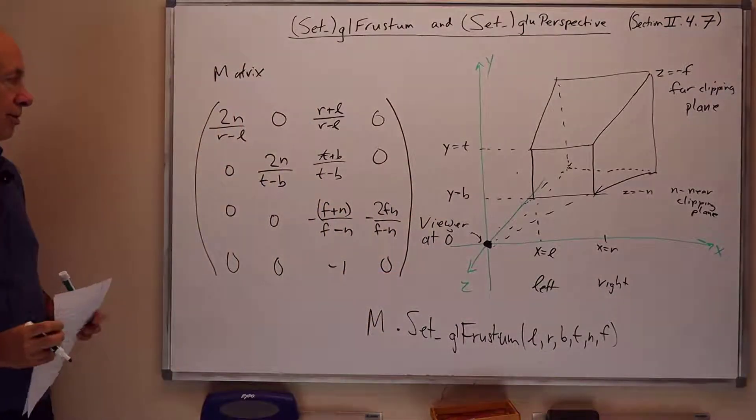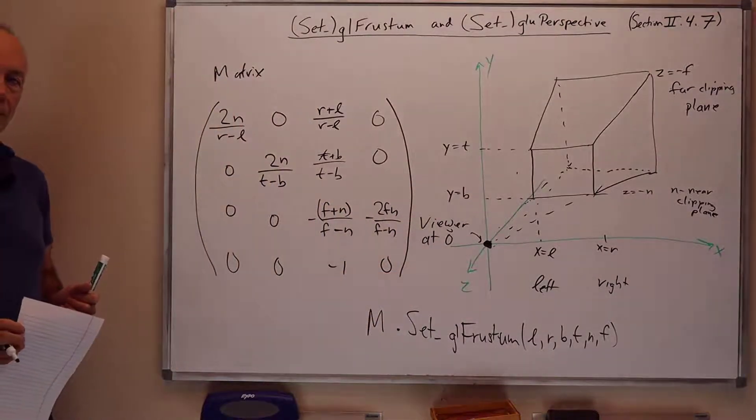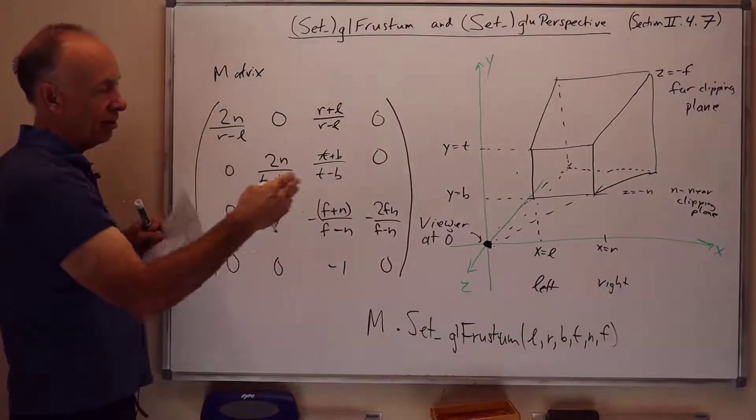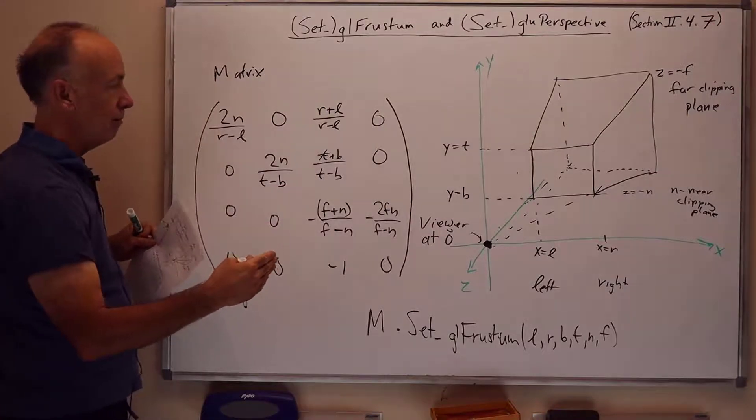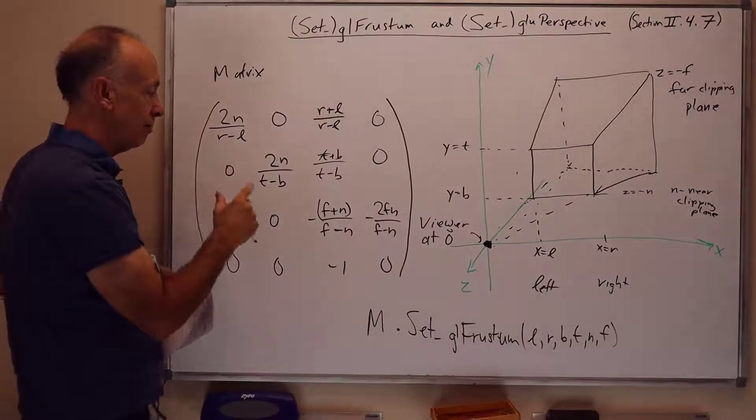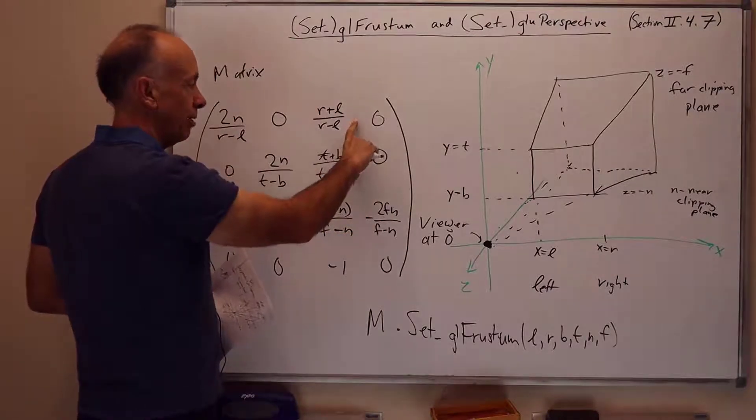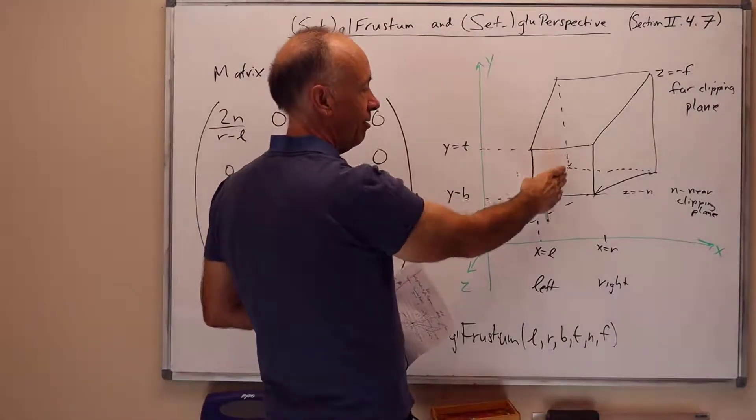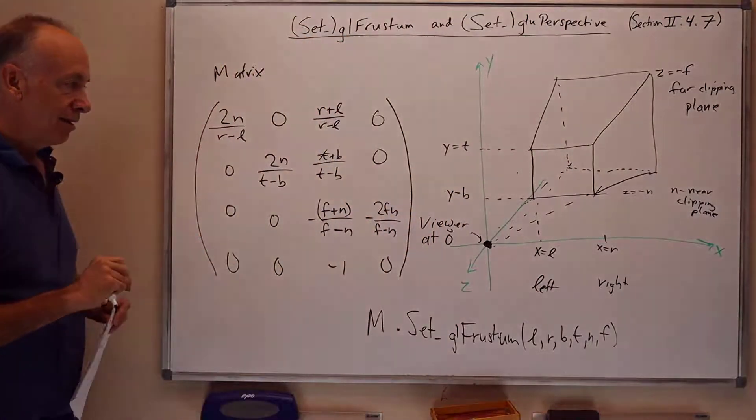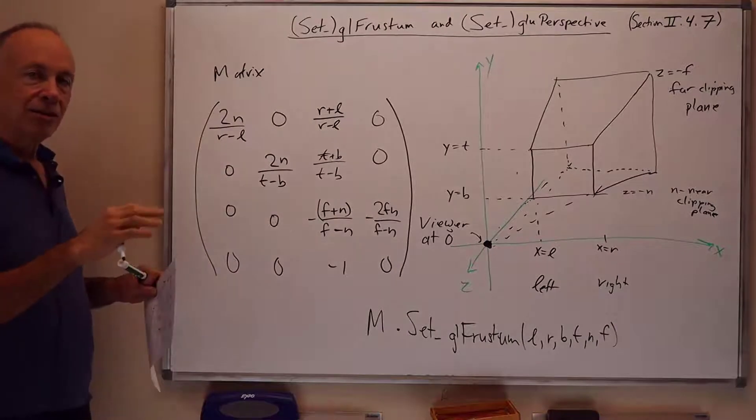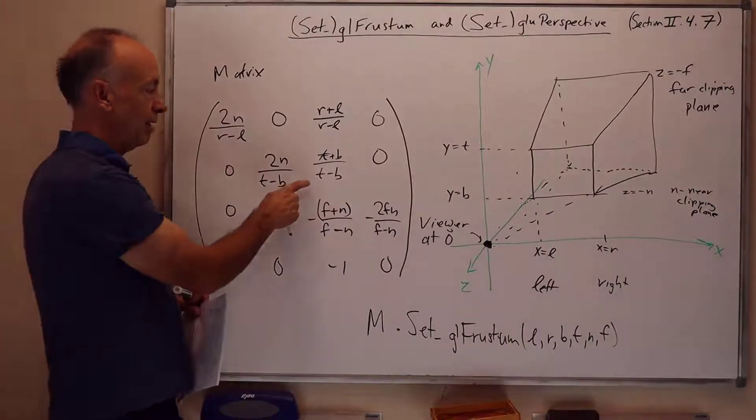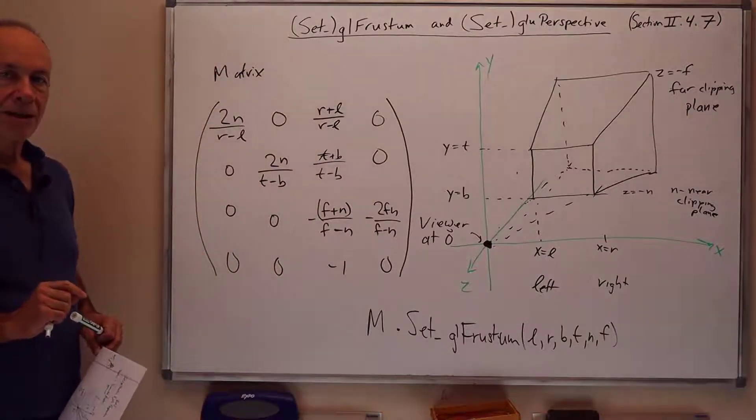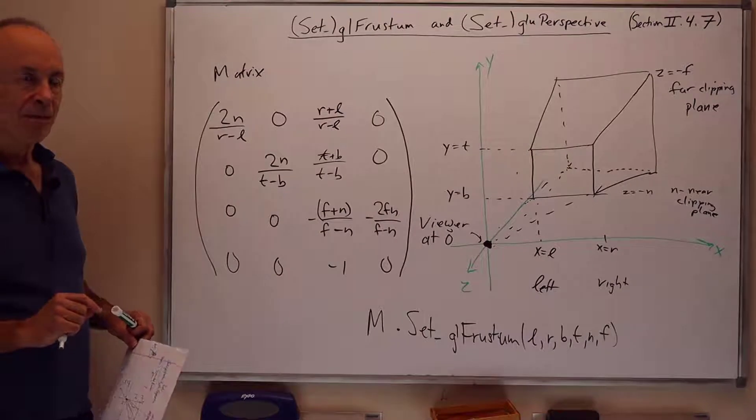This matrix is rather similar to the matrix P we defined in the previous presentation. We've got scaling on the x and y values to make the width be the right width, namely width 2. We've got scaling also on the z, but we've also got some translation which turns up here. The translation is due to the fact that the center of the frustum doesn't need to be on the z axis. It could be shifted sideways or something like that. And so this provides some translation. Otherwise, it's very similar to the matrix we had before. I'm not going to work out the details of the derivation. It's pretty much what we had before.